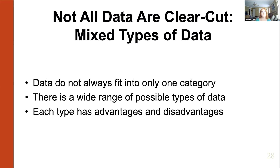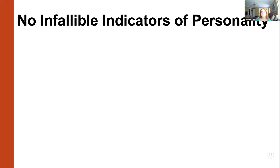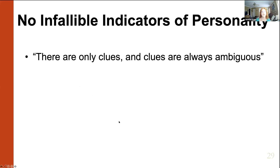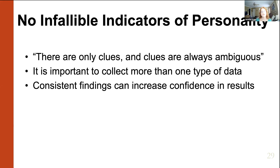The main thing is to be able to recognize those four main types of data, know what's good and bad about them, and understand that none of them are perfect. We have to collect as many as we possibly can, because each source of data is only a clue about that person. If you really want to get a sense of someone's personality, you have to collect as many clues as possible. The more you can find clues that are consistent across self-report, informant report, behavioral observation, and life outcome data, the more confidence you'll have that those data are valid.